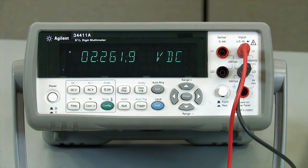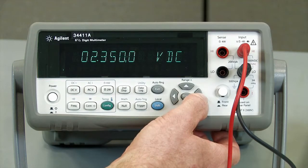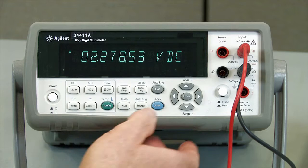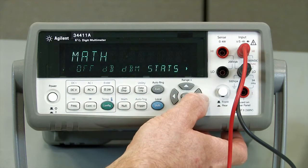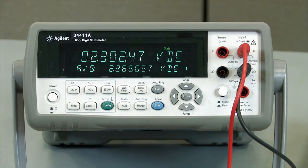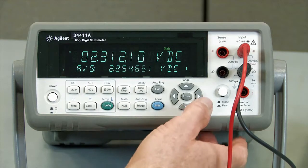So the default setting is one power line cycle. I'm going to go ahead and move up to 10 power line cycles. So we slowed the reading rate down. Again, I'm going to turn math on. But you can see it's much more stable integrating over time.